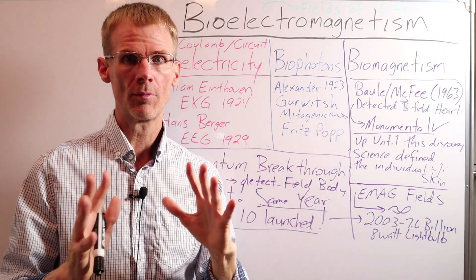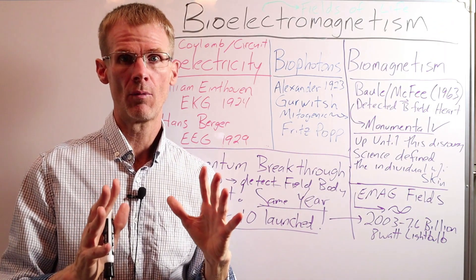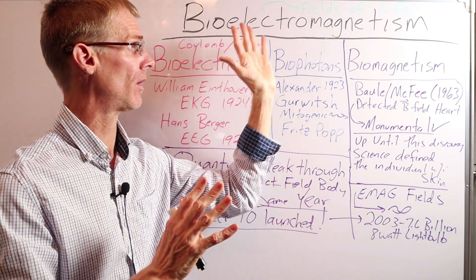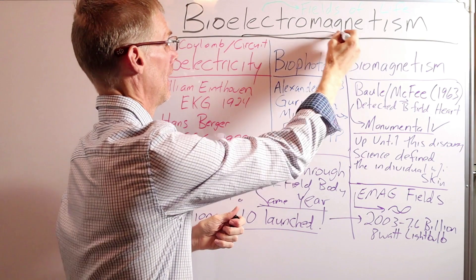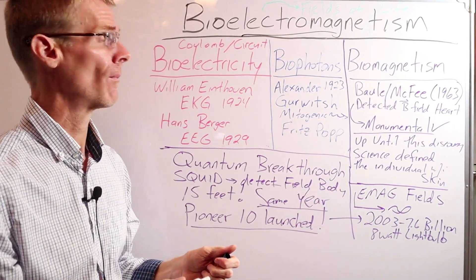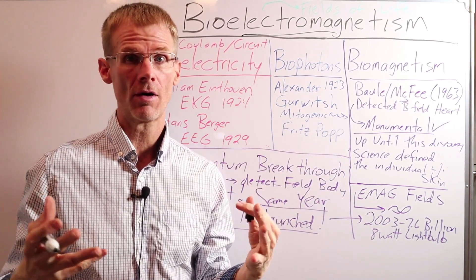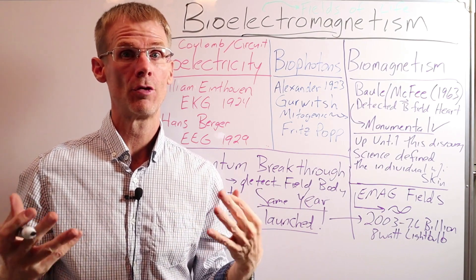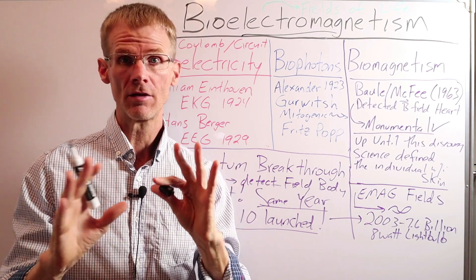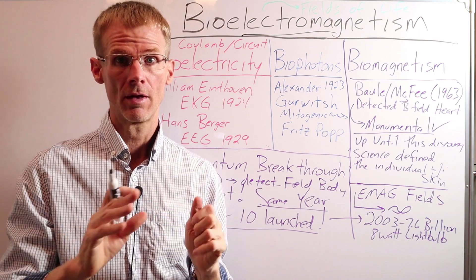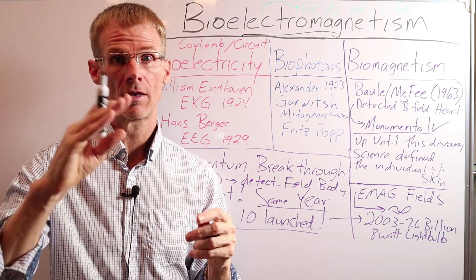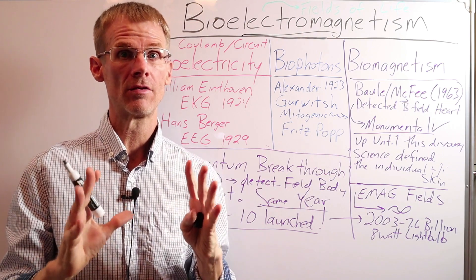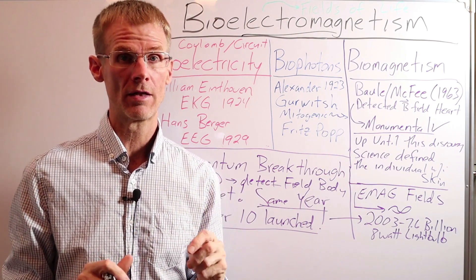So before we talk a little more in detail about biomagnetism, I want to first describe the field that it's a part of, which is bioelectromagnetism. And bioelectromagnetism is basically the study of all the electric, magnetic, and electromagnetic fields of the human body. And as I've talked about in other videos, electric fields, magnetic fields, and light or electromagnetic waves are qualitatively very different kinds of energy, even though they're all related by Maxwell's equations.